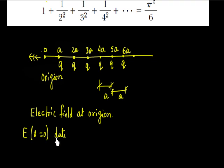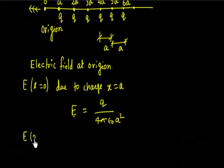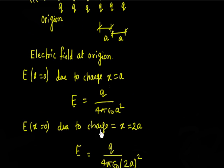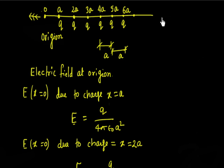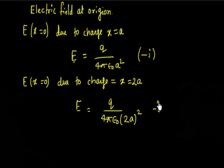Due to the charge at x equals to a, since things are straightforward, the electric field is q over 4πε₀ times a squared, and the distance is a. Similarly, the electric field at x equals to 0 due to the charge at x equals to 2a will be q over 4πε₀ times (2a) squared. All the electric fields are along the minus x axis, that is minus i-hat.